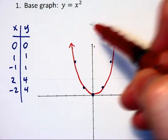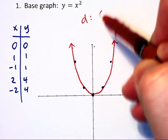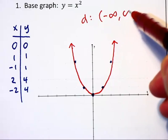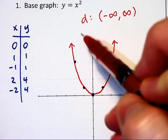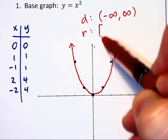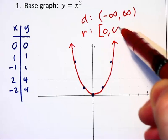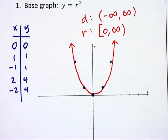Also notice that the domain of this graph is all real numbers, because as the graph goes upward, it's also going to the left and the right forever, and that the range of this graph is from zero to infinity, inclusive of the zero.